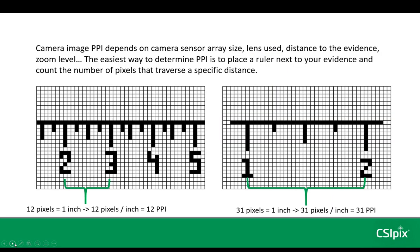Camera image PPI depends on the camera sensor array size, the lens that was used, the distance to the evidence, the zoom level, and other things — basically there are a lot of variables. By far the easiest way to determine the PPI of a camera image is to place a ruler next to the evidence and count the number of pixels that traverse a specific distance.